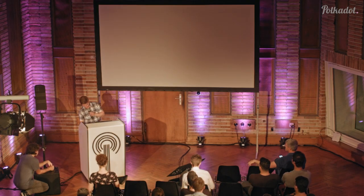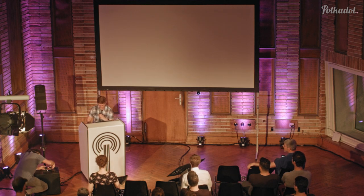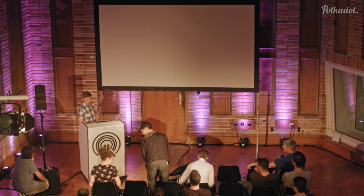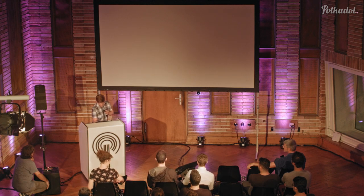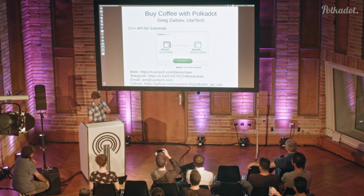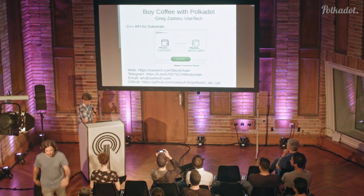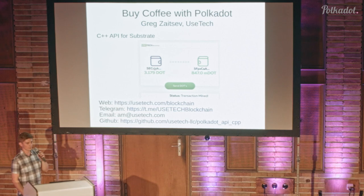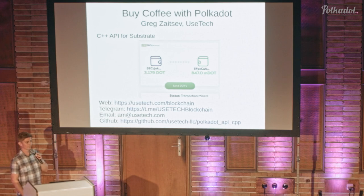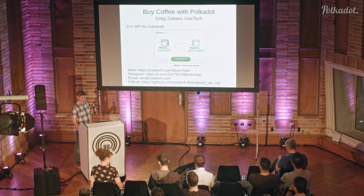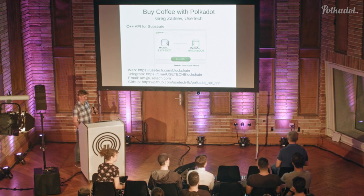So you can do many things with this API — not just sign DOT transactions. You can do anything that Substrate will allow you to do. I'm going to show a few links where you can get this API. It's open source. You can get it at GitHub, at the polkadot_api_cpp project, and you can find us on the web. Any questions? Let's get coffee.